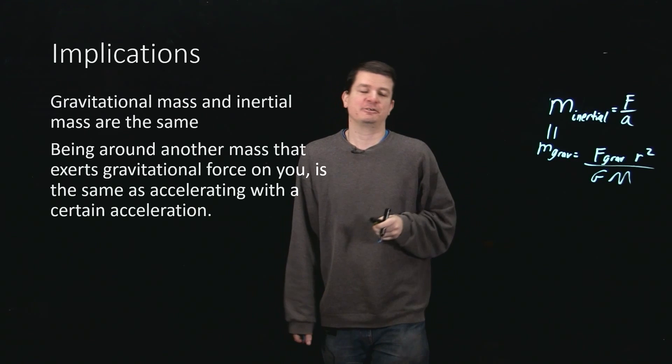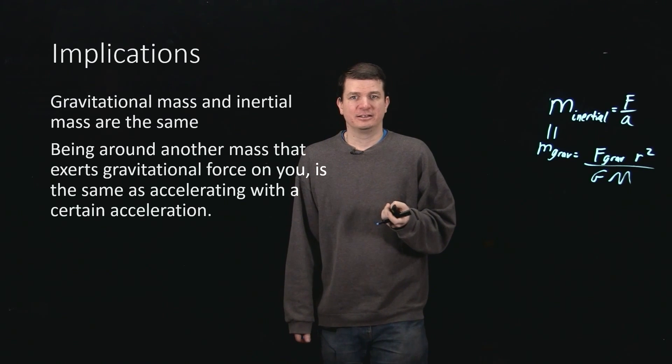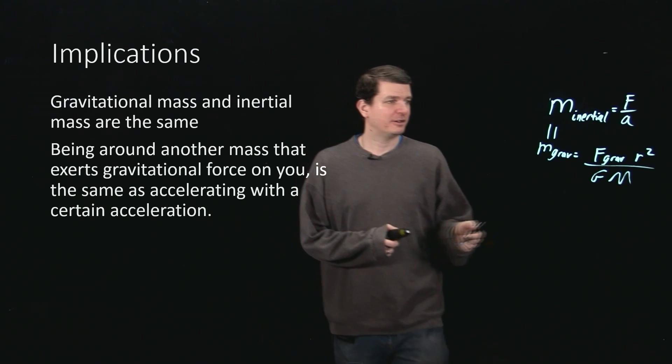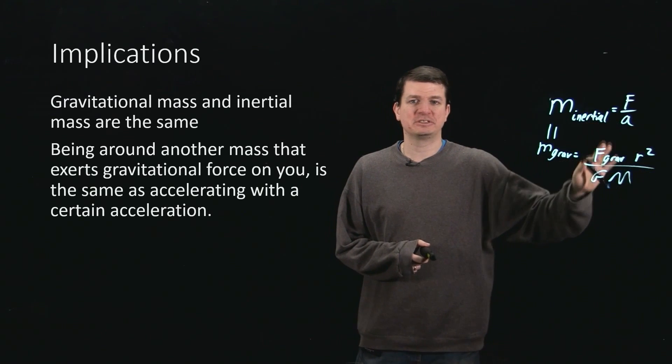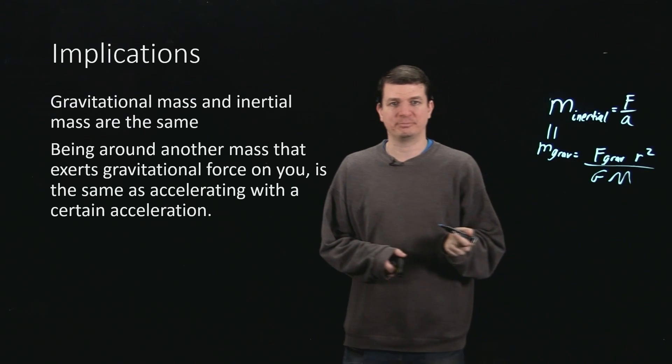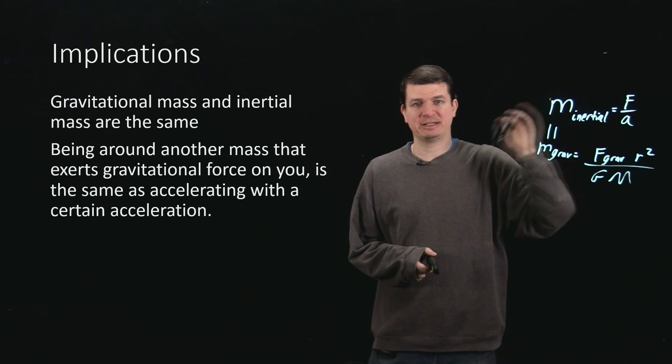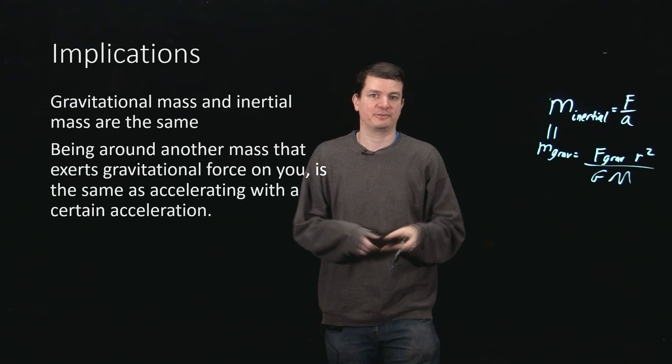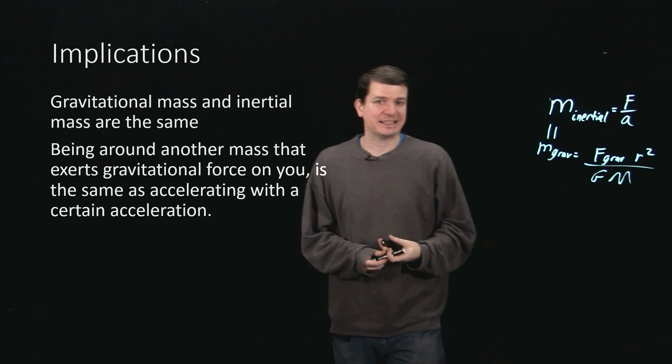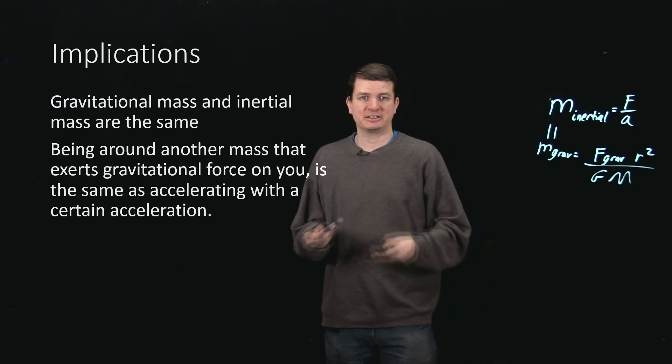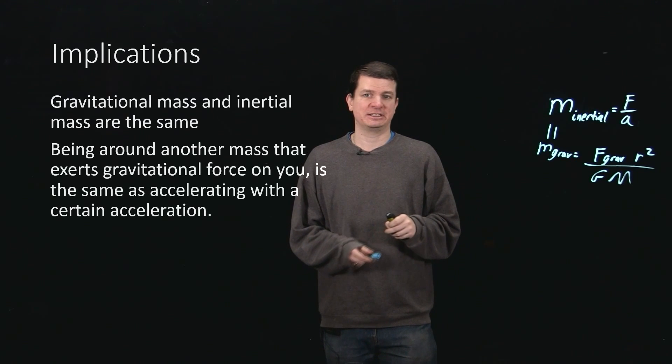So what does it mean to say that the gravitational mass and the inertial mass are the same? What it really means is that if I look at this one, I have an idea of what my mass is based on the force of gravity that I feel being around some other mass, M. On the other hand, I have some idea of what my mass is if I just experience an acceleration for some arbitrary force, a thrust force, a normal force, whatever. So what it means is that just being around another mass exerting some gravitational force on you is exactly the same as accelerating with a constant acceleration.